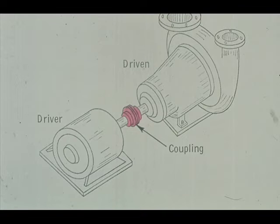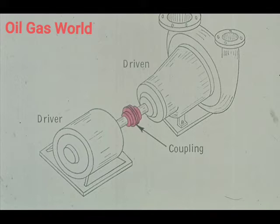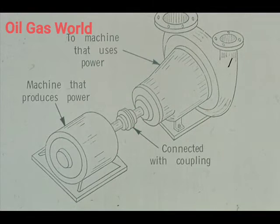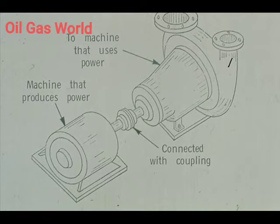In the case of rotating equipment, some device is needed to connect the shaft of the driver to the shaft of the driven equipment. This device is a coupling. In short, we have a machine that produces power, and another machine that uses power to perform useful work. The two are connected with a coupling.